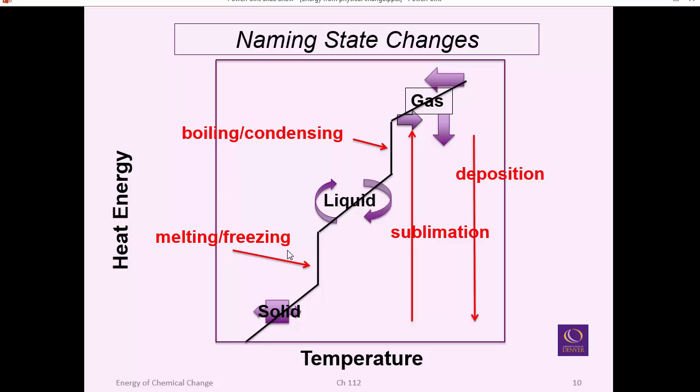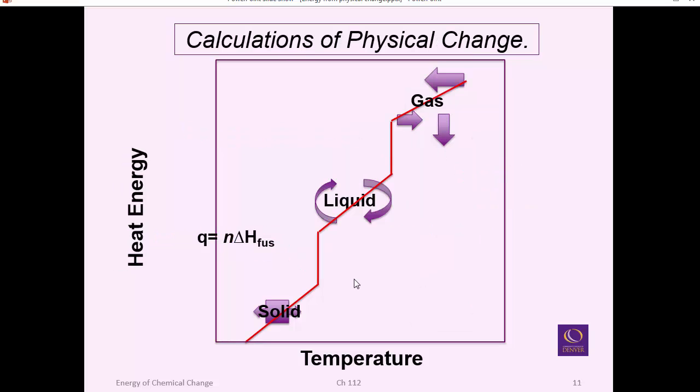The point of this talk is about doing actual energy calculations. The first phase transition uses this formula where Q means heat. N is number of moles. And there's a constant called the enthalpy of fusion. That's the energy constant that calculates how much energy is involved in melting something. And it's the same amount of energy required to freeze something per mole of material.